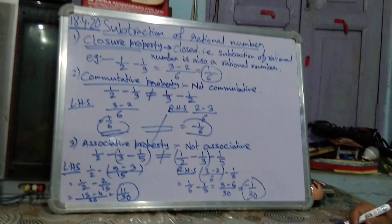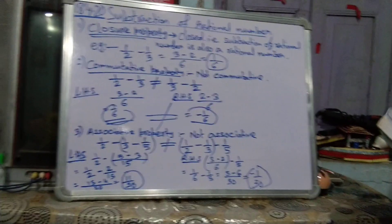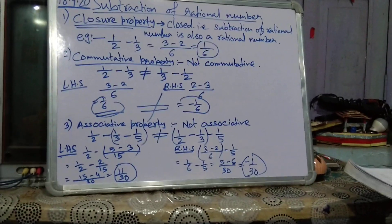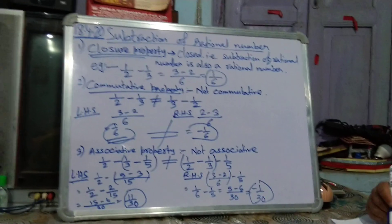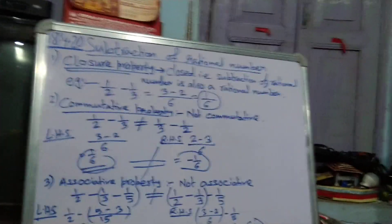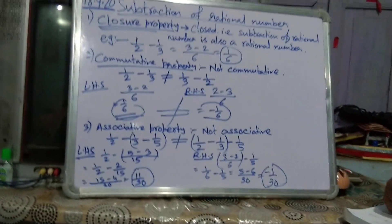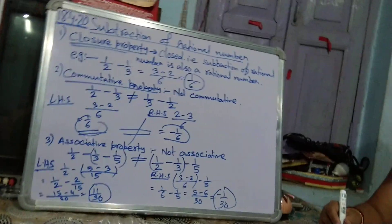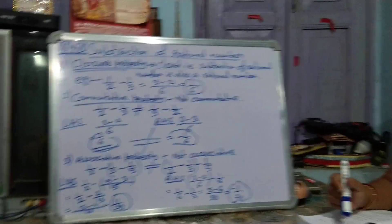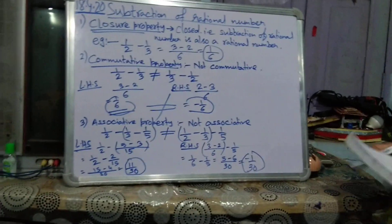Good morning students. I hope you have done additional rational numbers — I told you to do up to 7 numbers, 1 to 7. If you have any problem, ask me later on. Today we will do the subtraction of rational numbers.